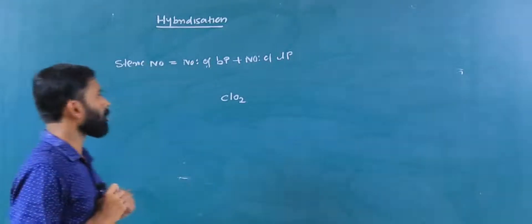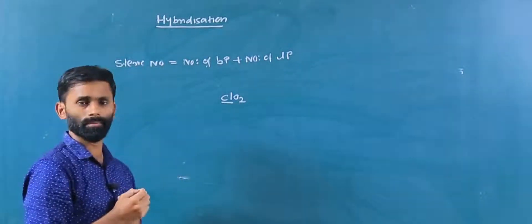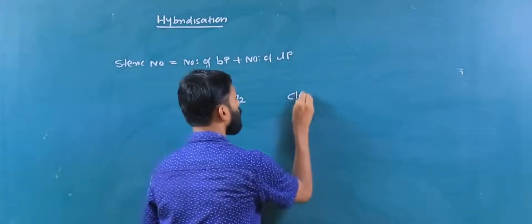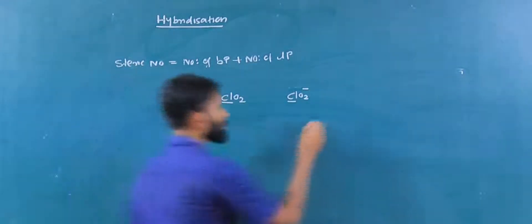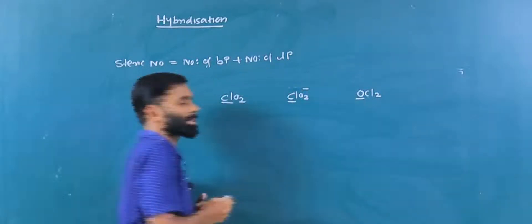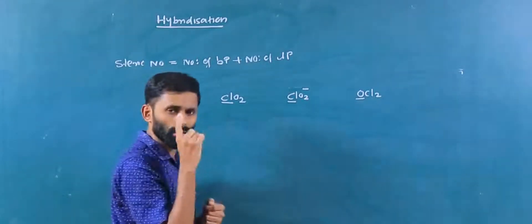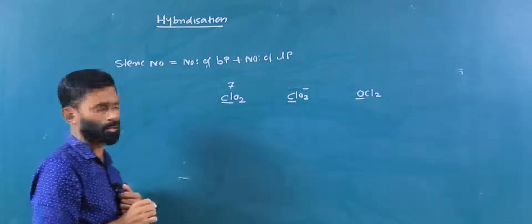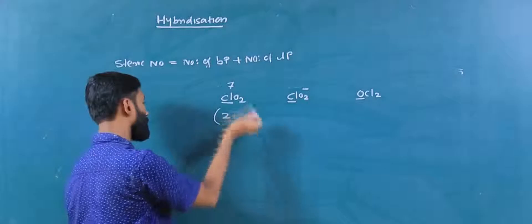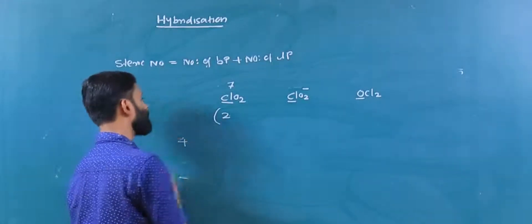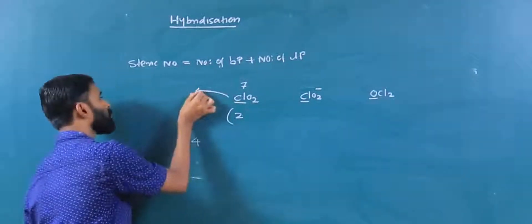Next molecule: ClO2. Chlorine is the central element, group 17, valence electrons 7. It forms 2 bonds to oxygen as double bonds, so 2 bonds means 4 bond electrons. Calculation: 7 minus 4 equals 3. ClO2 has one unpaired electron. Hybridization is SP2.